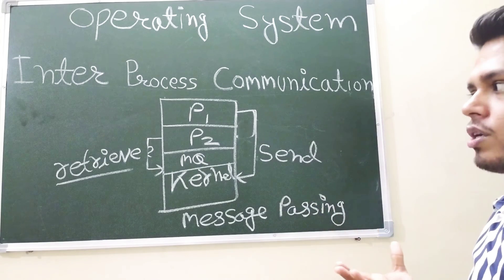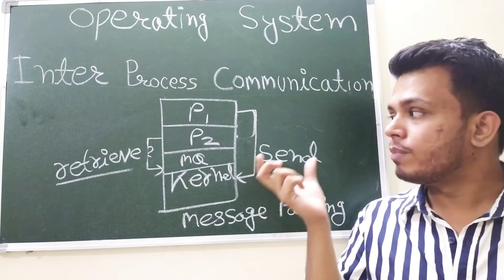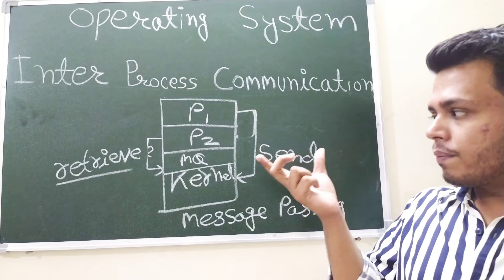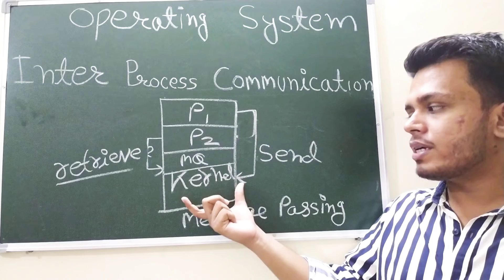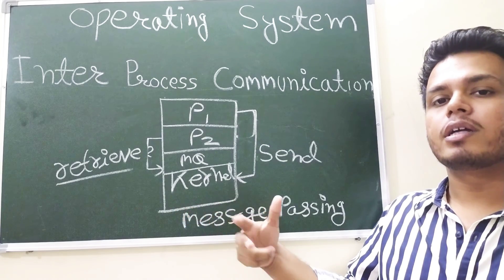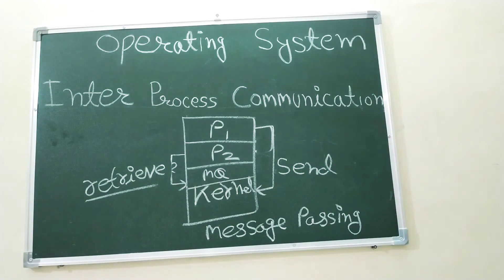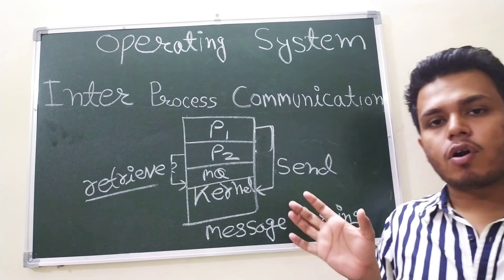And these two models are very important with respect to inter-process communication. So there is a question, which one is faster between these two? Because there is interaction of kernel, it is pretty obvious this will not be that much fast.